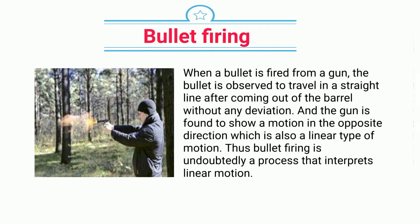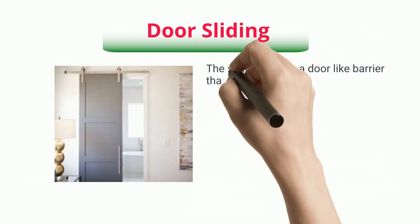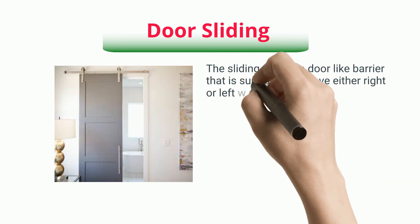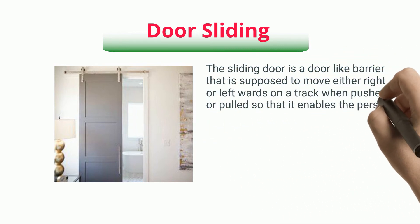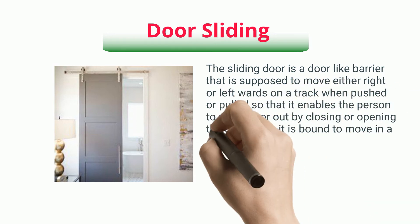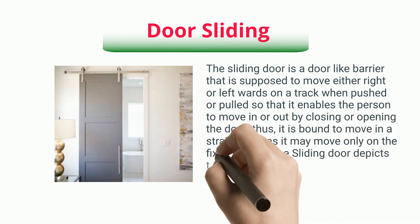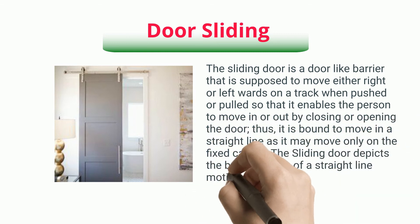Door sliding: the sliding door is a door-like barrier that is supposed to move either right or leftwards on a track when pushed or pulled so that it enables the person to move in or out by closing or opening the door. Thus, it is bound to move in a straight line as it may move only on the fixed casing. The sliding door depicts a best instance of straight line motion in day-to-day life.